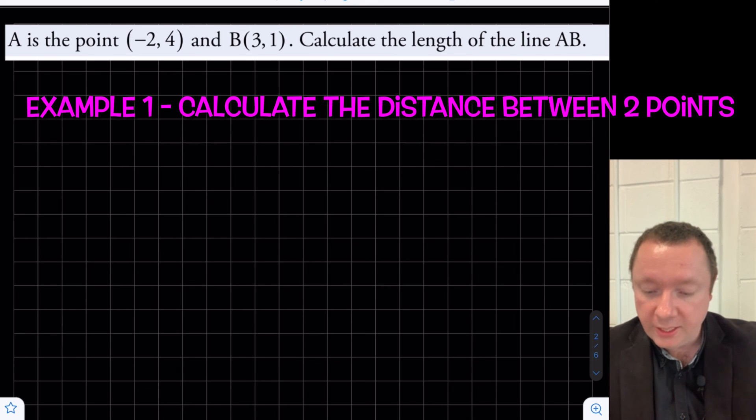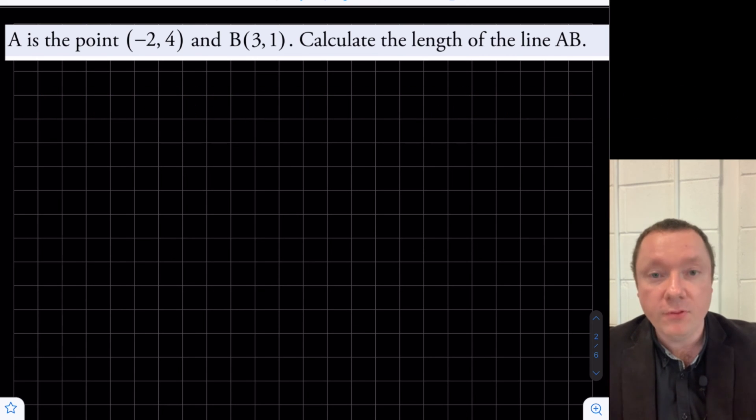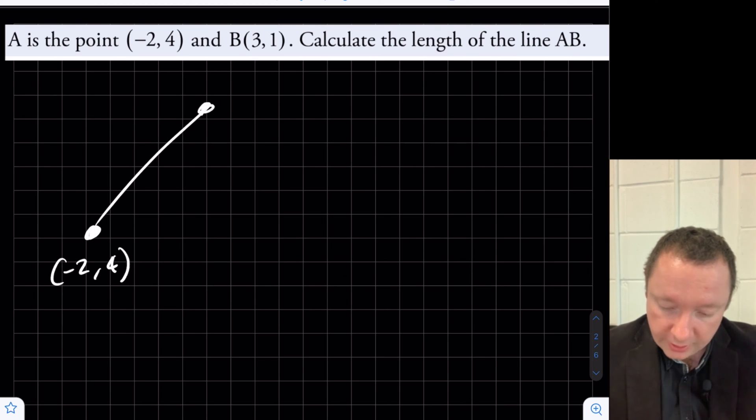A is the point minus 2, 4. B is 3, minus 1. Calculate the length of the line AB. So to visualize that, we could have point A here being minus 2 and 4. Point B here could be 3 and 1. And it's asking us the length of the line. So we need to know the distances.